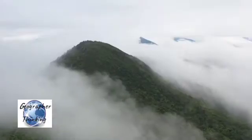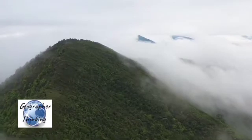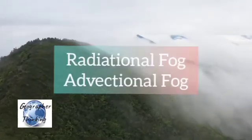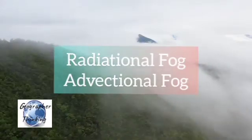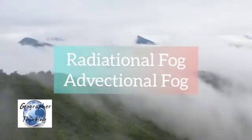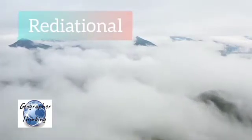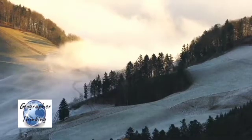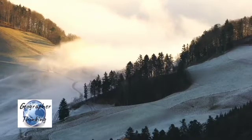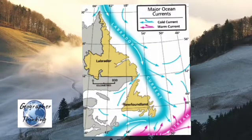Fog is simply a cloud on the ground. There is no difference between a cloud and fog except the location and formation process. There are two types of fog: radiational fog and advectional fog. Radiation fog results from radiational cooling, usually at night. Advectional fog develops when warm moist air moves horizontally over a cold surface, such as snow-covered ground or cool ocean currents like the Labrador Current near Newfoundland.